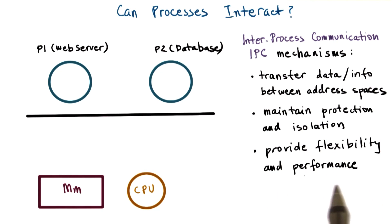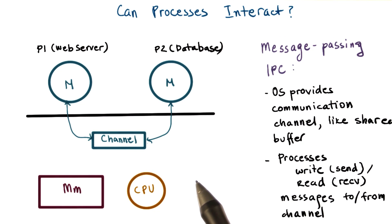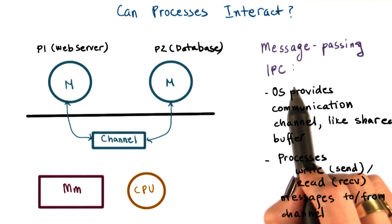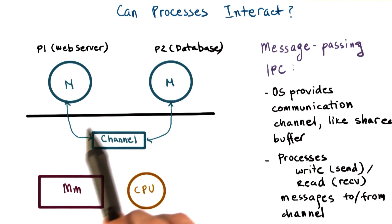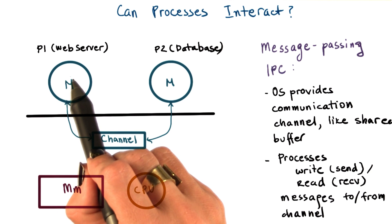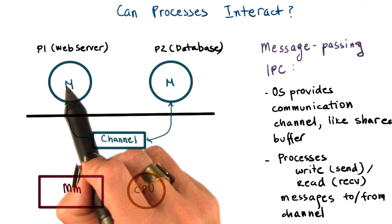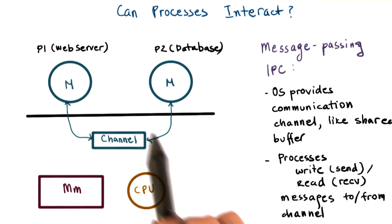One mechanism that operating systems support is message-passing IPC. The operating system establishes a communication channel, like a shared buffer, for instance, and the processes interact with it by writing or sending a message into that buffer, or reading or receiving a message from that shared communication channel. So it's message passing because every process has to put the information that it wants to send to the other process explicitly in a message, and then send it to this dedicated communication channel.